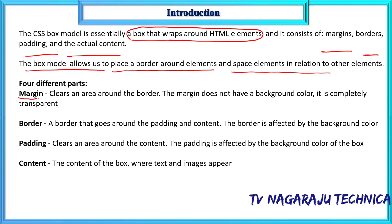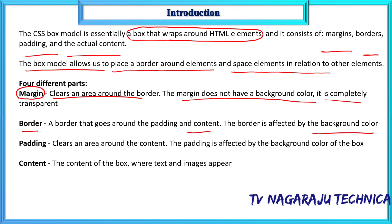The most important parts of the box model are: first, margin — the margin property creates space around elements outside of the border. The margin does not have any background color; it is completely transparent. The border is used to make a border around the content, and each border has some background color.